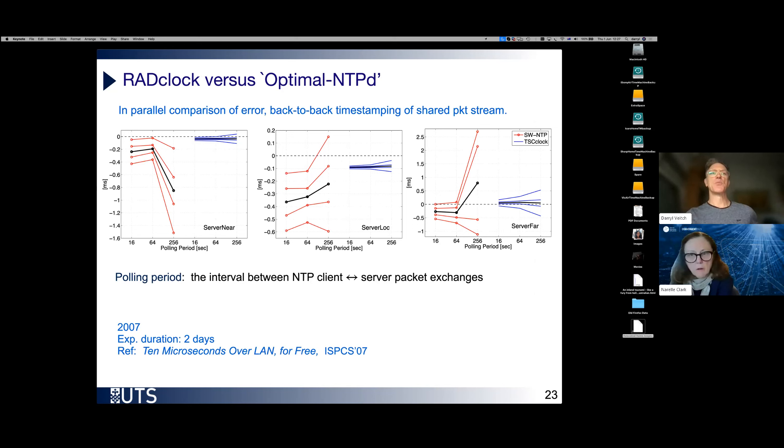This experiment was over two days and was one of the experiments which took a long time to put together. This tries to compare performance between RADclock and the status quo by systematically examining what happens as a function of key parameters. We've got round-trip time, essentially the server, something very close on the left, something a bit further away in the middle and something a long way away, in this case from Melbourne to Perth on the right-hand side. And as a function of polling period, which is the frequency you're having those timestamping exchanges with the server.